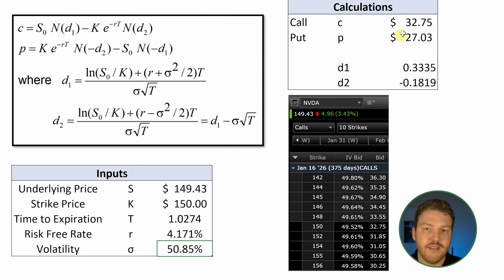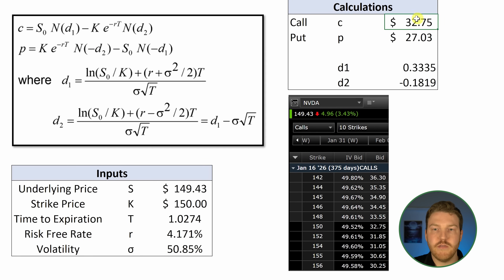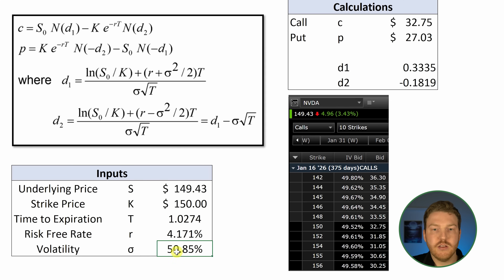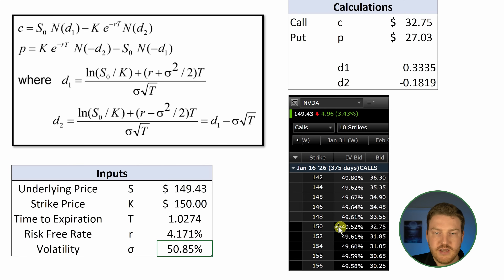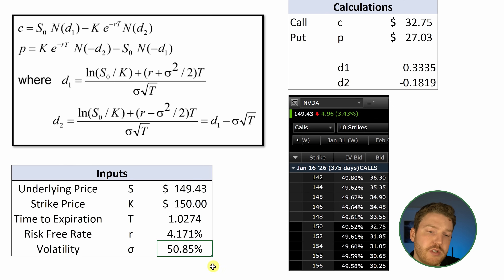The implied volatility that produces a call option price of $32.75 comes out to 50.85%. Looking at the NVIDIA option chain from Fidelity Active Trader Pro, the implied volatility on the bid for this call option is listed as 49.52%. So I'm off by just about 1%, which is a pretty immaterial difference.